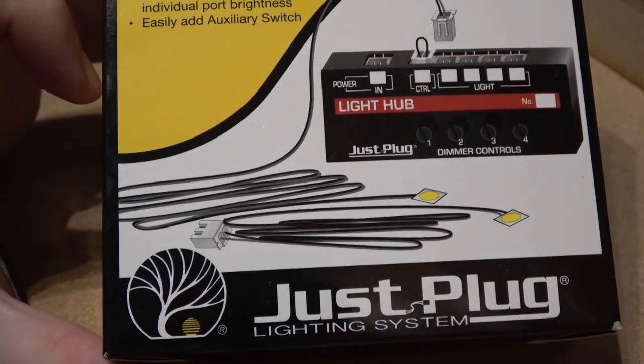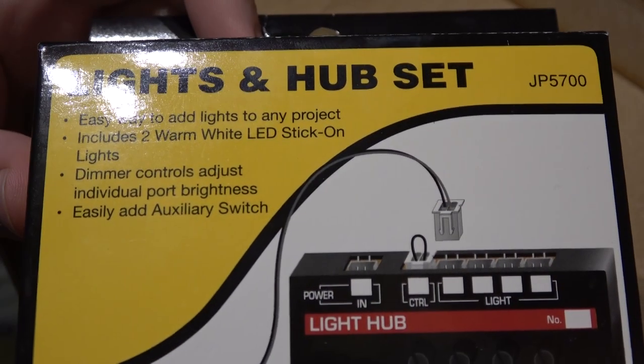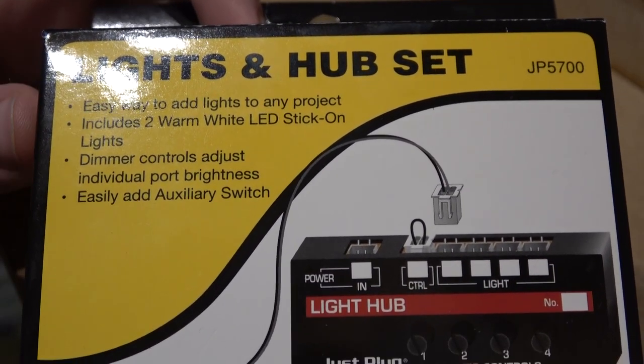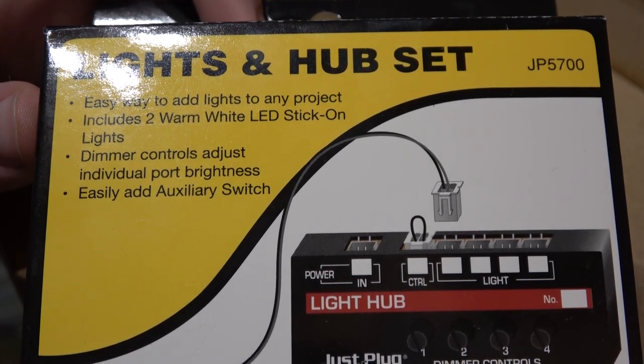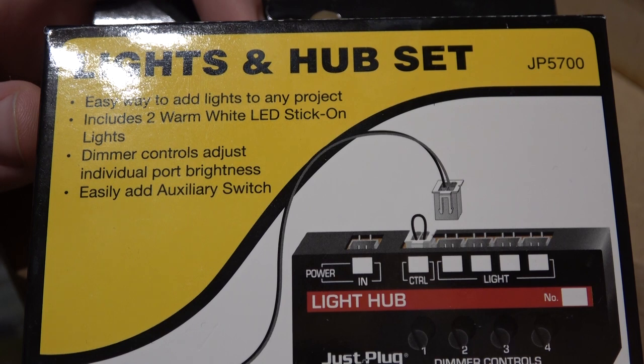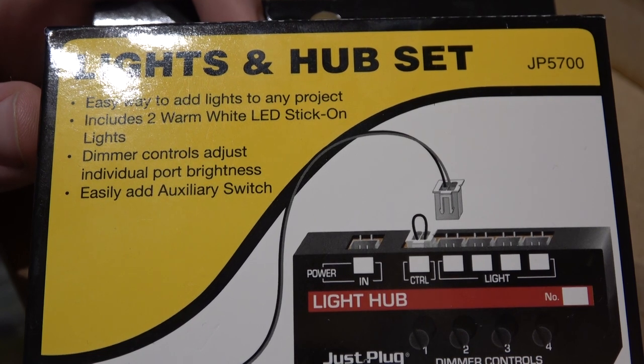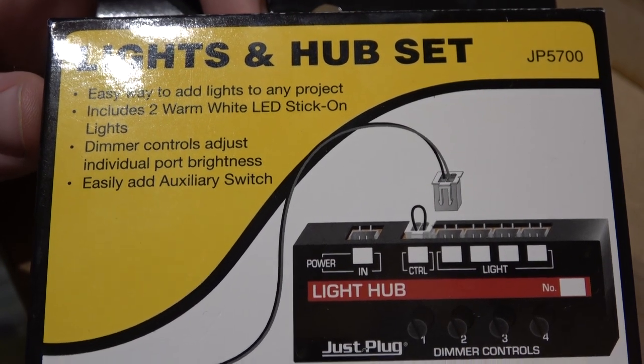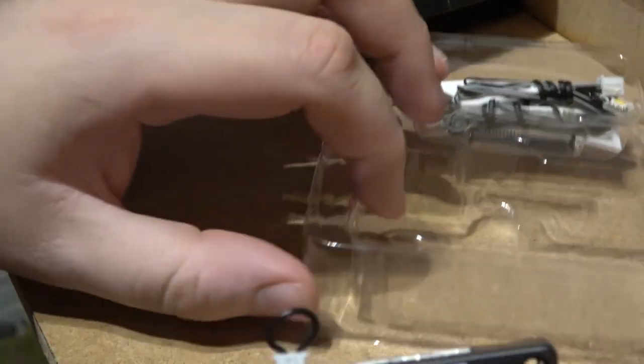This is the starter kit. It's JP5700 and you get in it an easy way to add lights to any project. Includes two warm LED stick-on lights, dimmer controls adjust individual port brightness, and easy to add auxiliary switch if you want. So I'll take this out and we can see what we actually get in here.